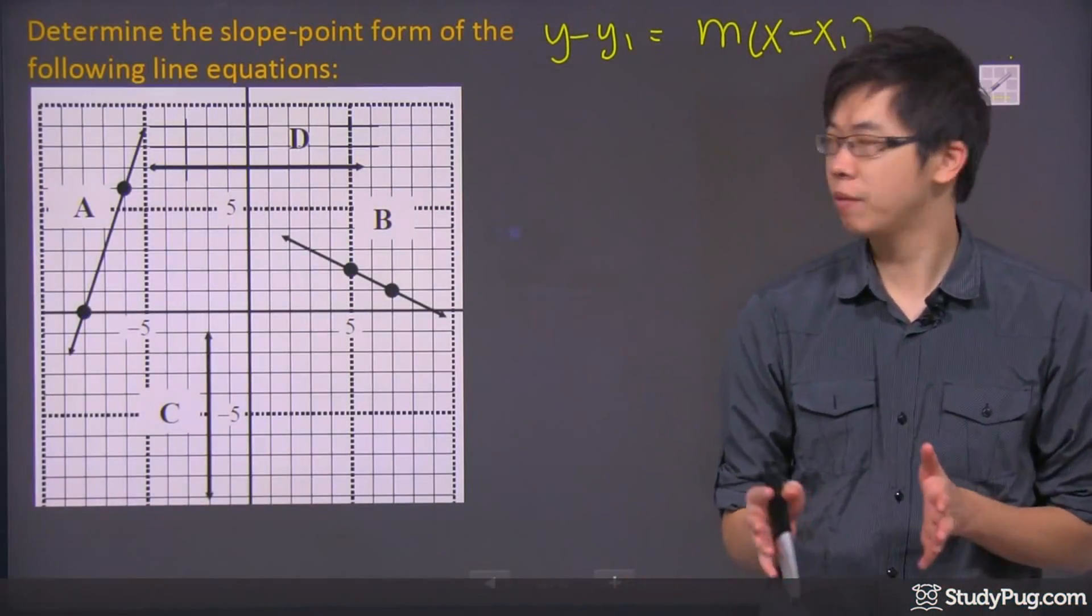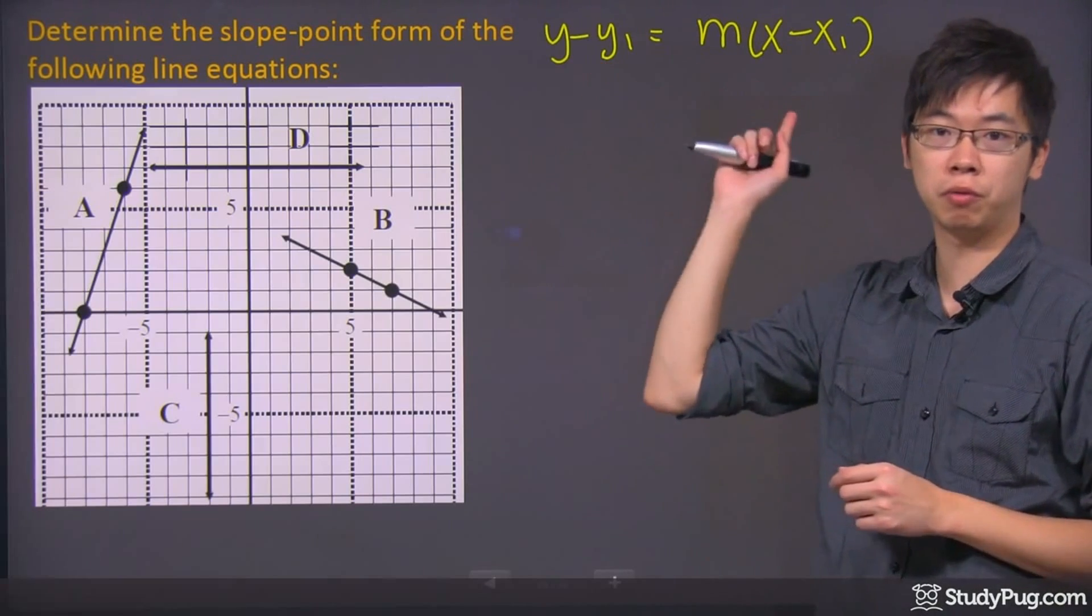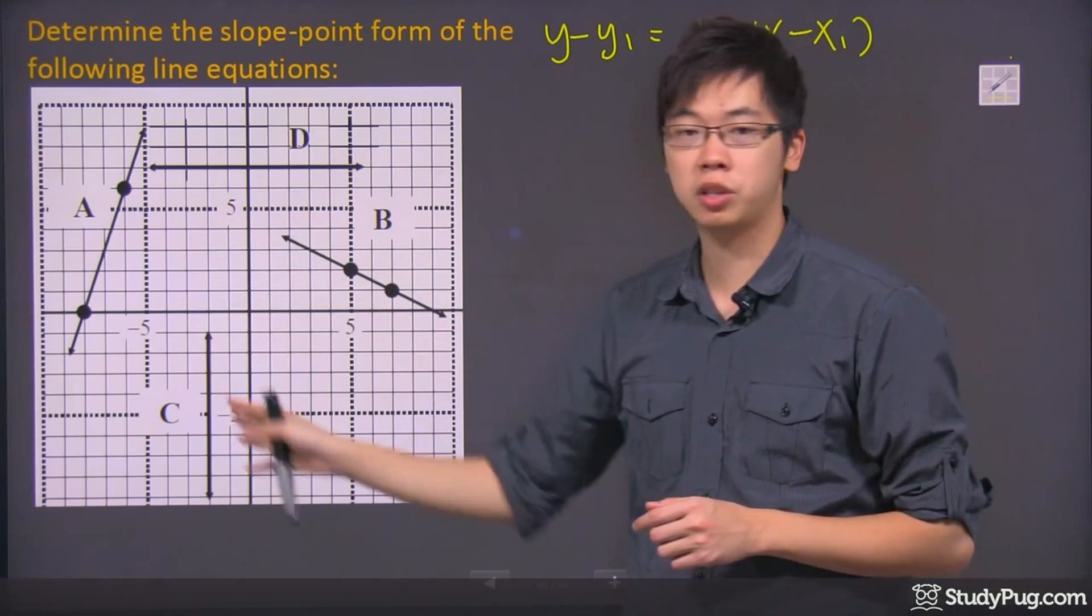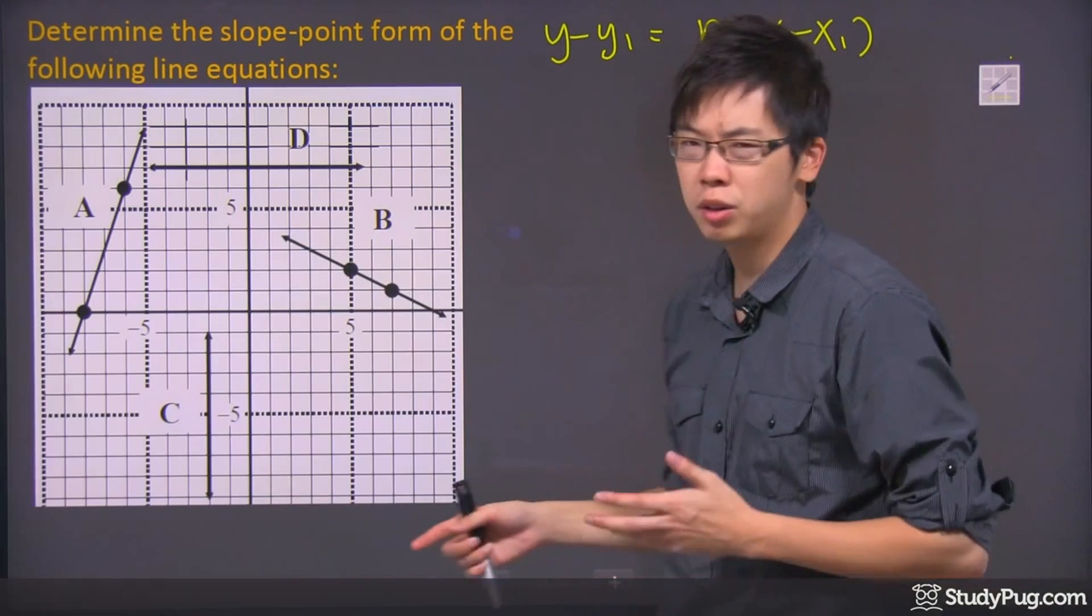Hi, welcome to this question right here. We have a question trying to find a slope point form. So this is the slope point form for all these line equations over here. Let's go ahead and find all of them. It's pretty straightforward.